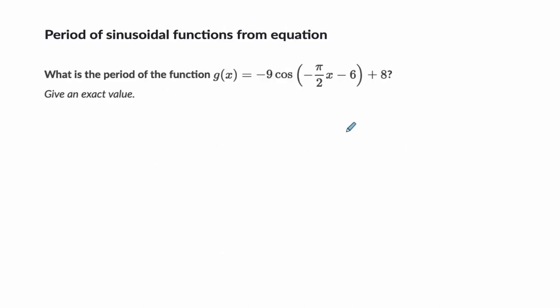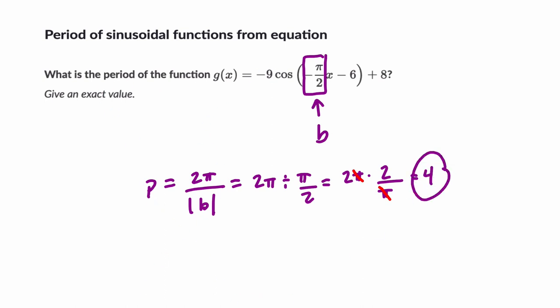Next example. Now we can move faster. We know we're looking at this as our b value. Sometimes referred to as k. And period is 2 pi divided by the absolute value of whatever b is. So in this case, it's going to be 2 pi divided by just pi over 2. We're taking the absolute value of it. And that means it's going to be 2 pi times 2 over pi. And what happens? The pi's cancel out. And 2 times 2 is 4. So every 4 units, this wave will repeat itself.